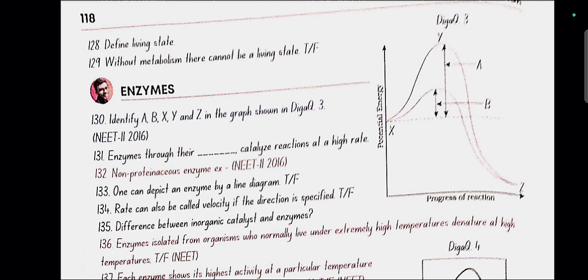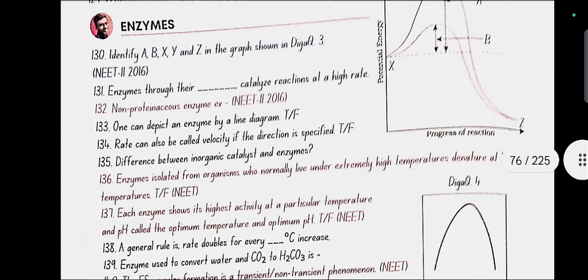Enzymes through their active site catalyze reactions at a higher rate. Non-proteinaceous enzyme example: ribozyme. One can depict an enzyme by a line diagram. Yes, true. Rate can also be called velocity if the direction is specified.